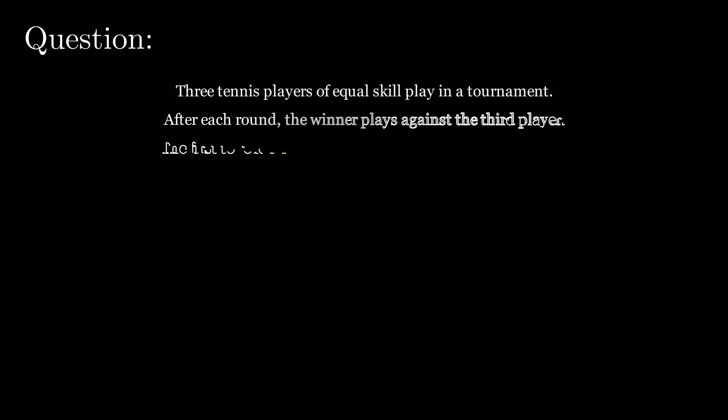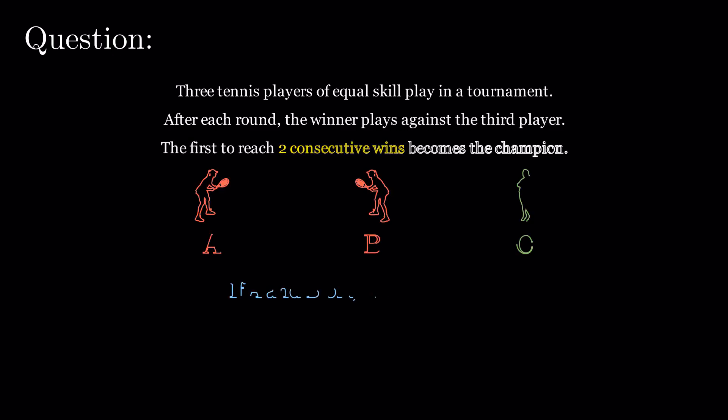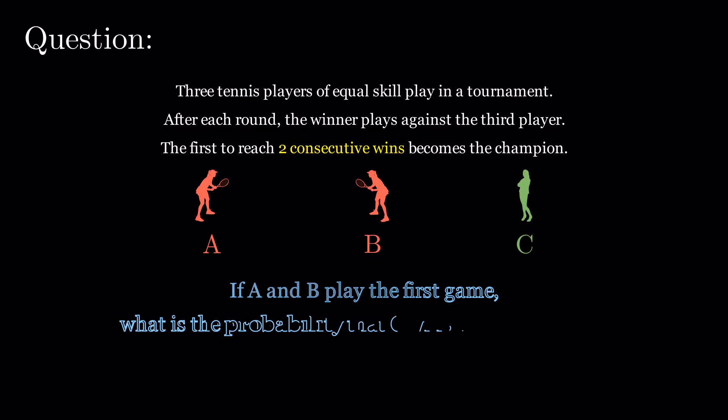Three equally skilled tennis players play in a tournament. After each round, the winner plays against the third player. The first to reach two consecutive wins becomes the champion. If A and B play the first game, what is the probability that C wins the tournament?